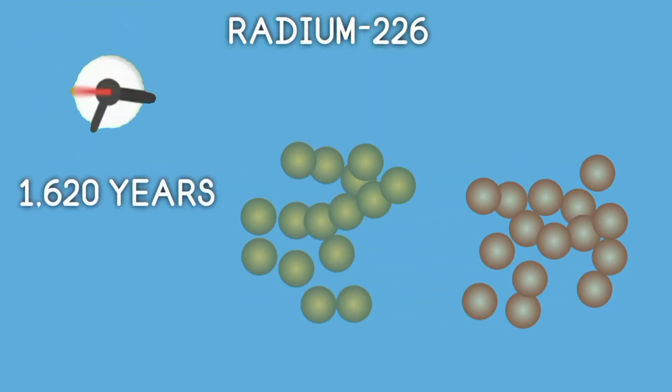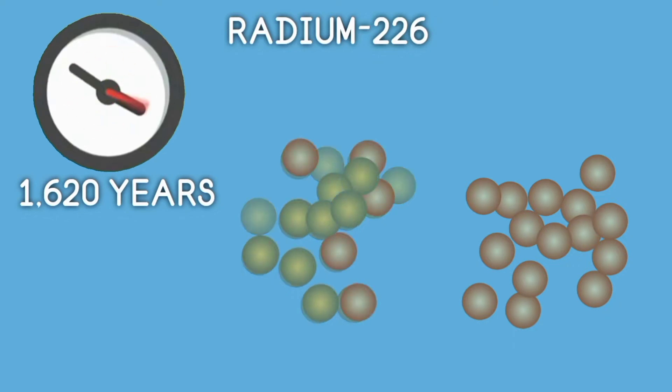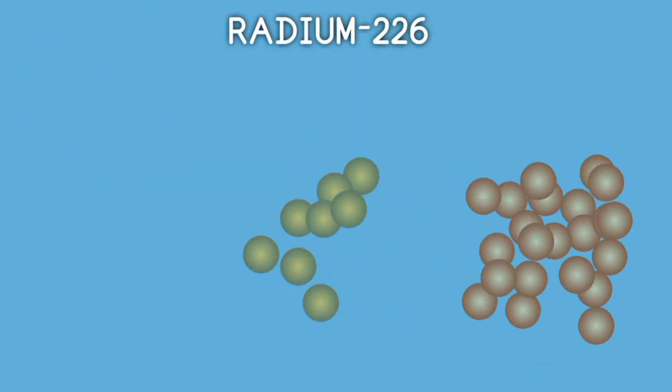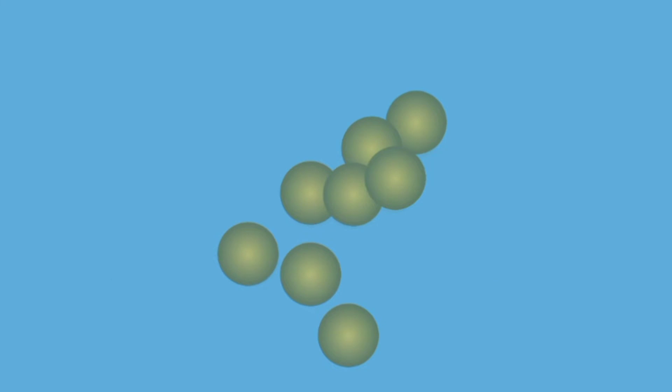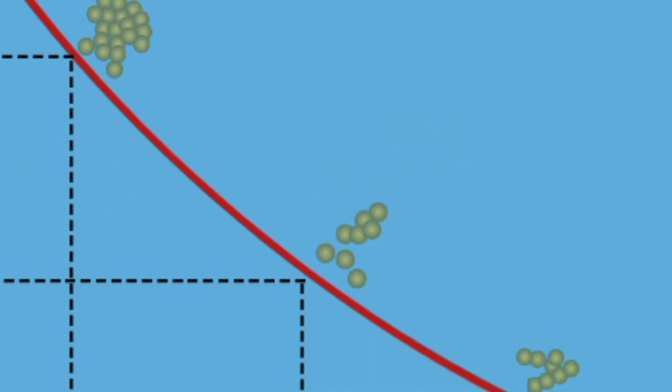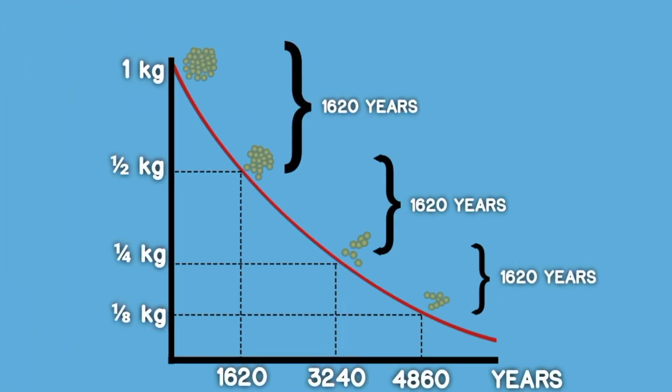In the next 1,620 years, half of the remaining radium will decay, leaving only one-fourth of the original amount of radium. After 20 half-lives, the initial quantity of radium will be diminished by a factor of about 1 million.